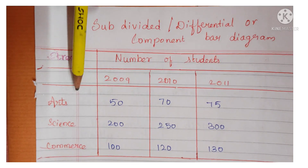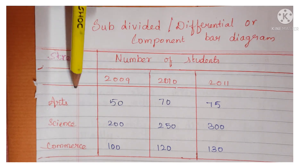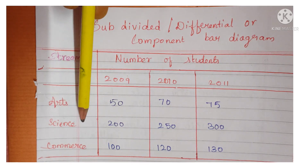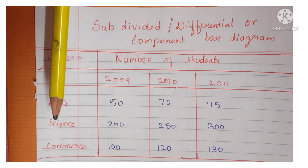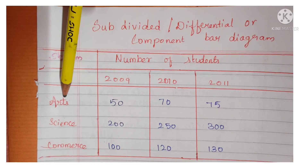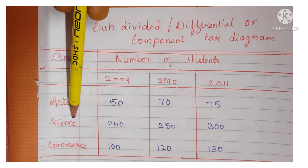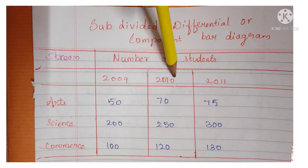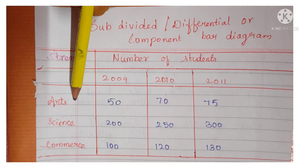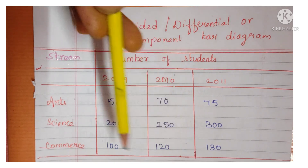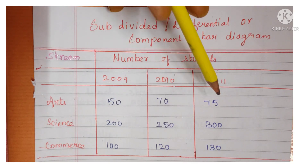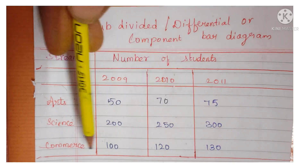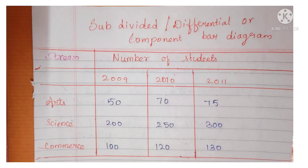Example: stream — arts, science, commerce — in a college. In the year 2009: 50 students admitted in arts, 200 in science, 100 in commerce. In 2010: 70 in arts, 250 in science, 120 in commerce. In 2011: 75 in arts, 300 in science, 130 in commerce.